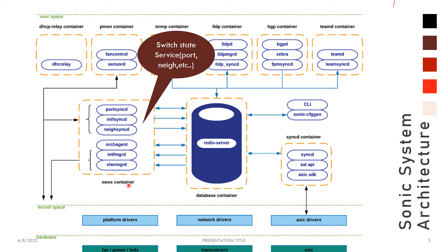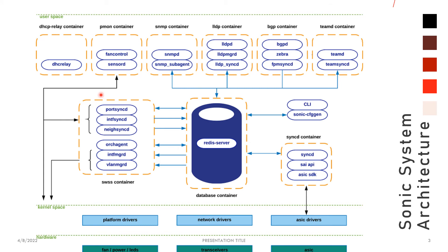SWSS is the Switch State Service. In a switch we have to maintain the FIB tables, port, neighbor, and everything. So SWSS handles port, interface, SyncD, neighbor, and also ArcGEN to pass on the configurations, VLAN interface — all of these are the kernel-related states of the switch. These states are given to SyncD, and SyncD will sync them to the ASIC driver. That is the main functionality of the SWSS container.